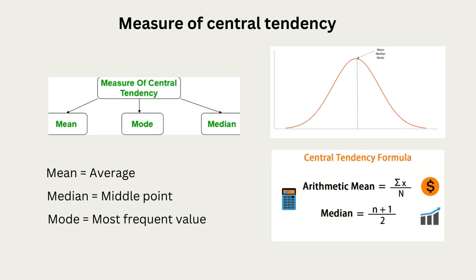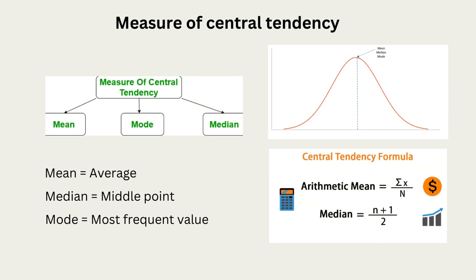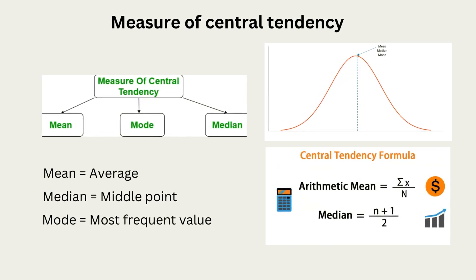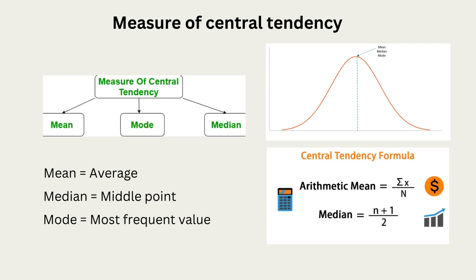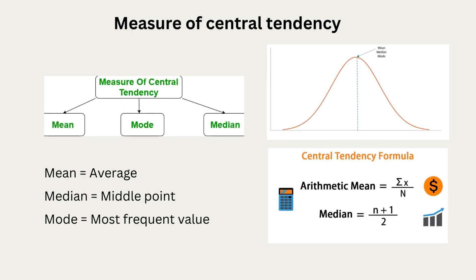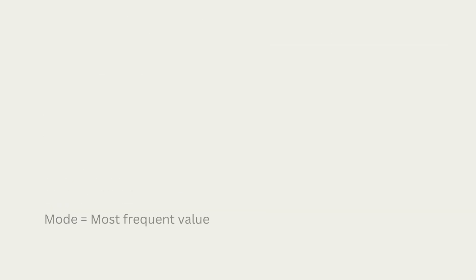Let's begin with understanding the most basic concept in statistics, which is the measure of central tendency. This concept talks about the center value of your distribution. It has three different measures: mean, median, and mode. In analysis, we generally use mean and median the most, so we'll focus more on those in this video.